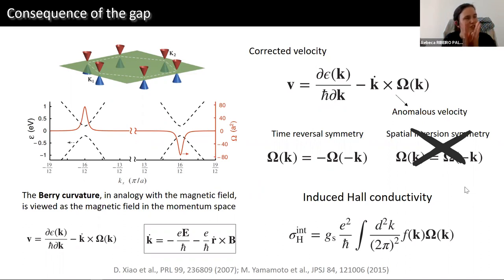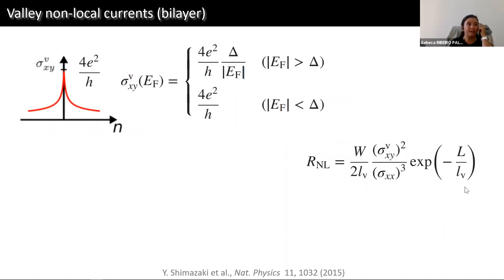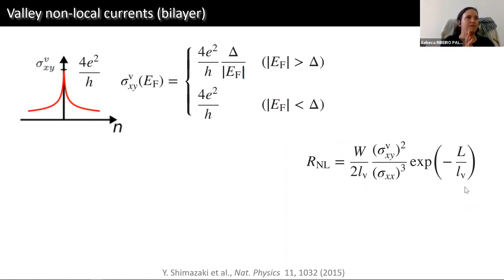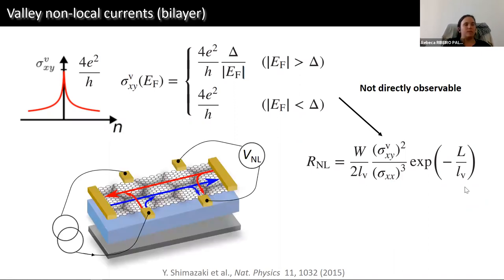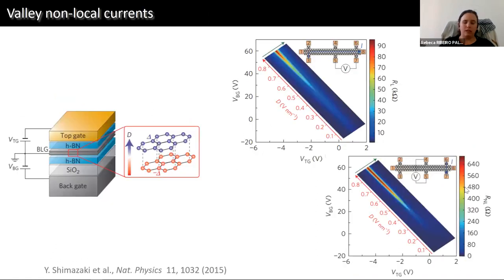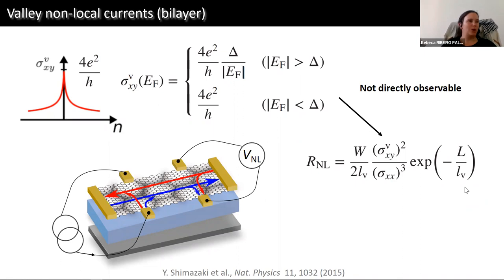When we break inversion symmetry in bilayer graphene — just as in monolayer — we get a non-zero Berry curvature, which gives rise to an anomalous velocity. Carriers will move away from a straight trajectory, with the Berry curvature being opposite depending on which valley the carriers belong to. This induces a valley Hall conductivity. In bilayer graphene, this conductivity is different because the Berry phase is 2π instead of π, so the valley Hall conductivity is quantized to 4e²/h instead of 2e²/h as in monolayer. The only transport tool we have to measure this is the non-local resistance.